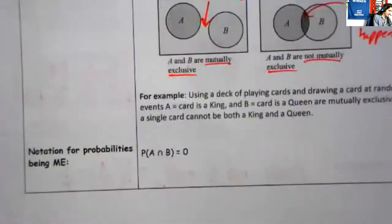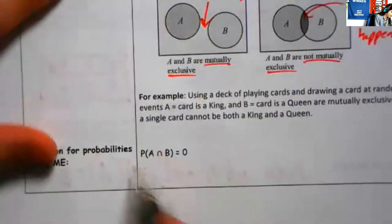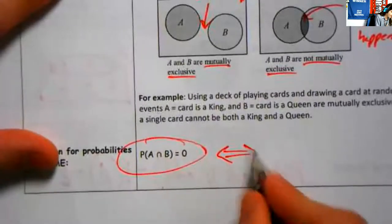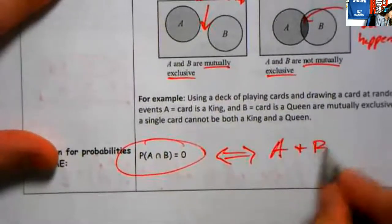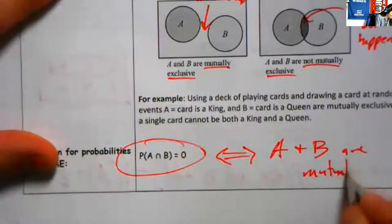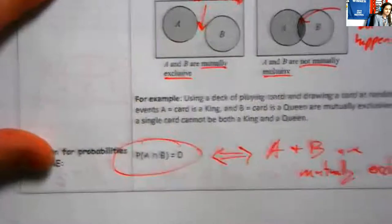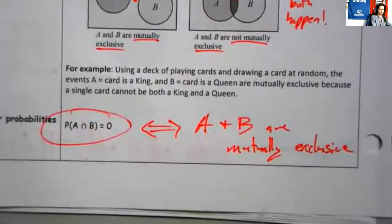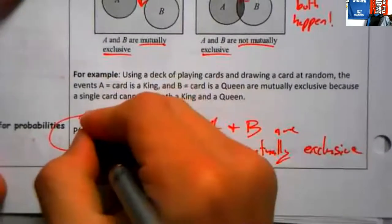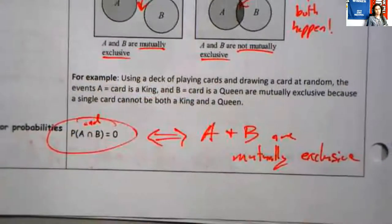You can see examples with playing cards. The probability of A and B is zero — if you see that, that is an implication that A and B are mutually exclusive. If A and B are mutually exclusive, you can write that the probability of A and B happening is zero.